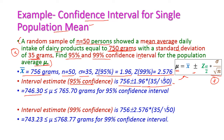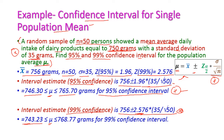We get 740.30 less than or equal to mu less than or equal to 759.70 grams for the 95 percent confidence interval. For the 99 percent confidence interval: 750 plus or minus 2.576 times 35 divided by root 50. The population mean lies between 743.23 and 756.77 grams — this is the lower limit and upper limit for the 99 percent confidence interval.